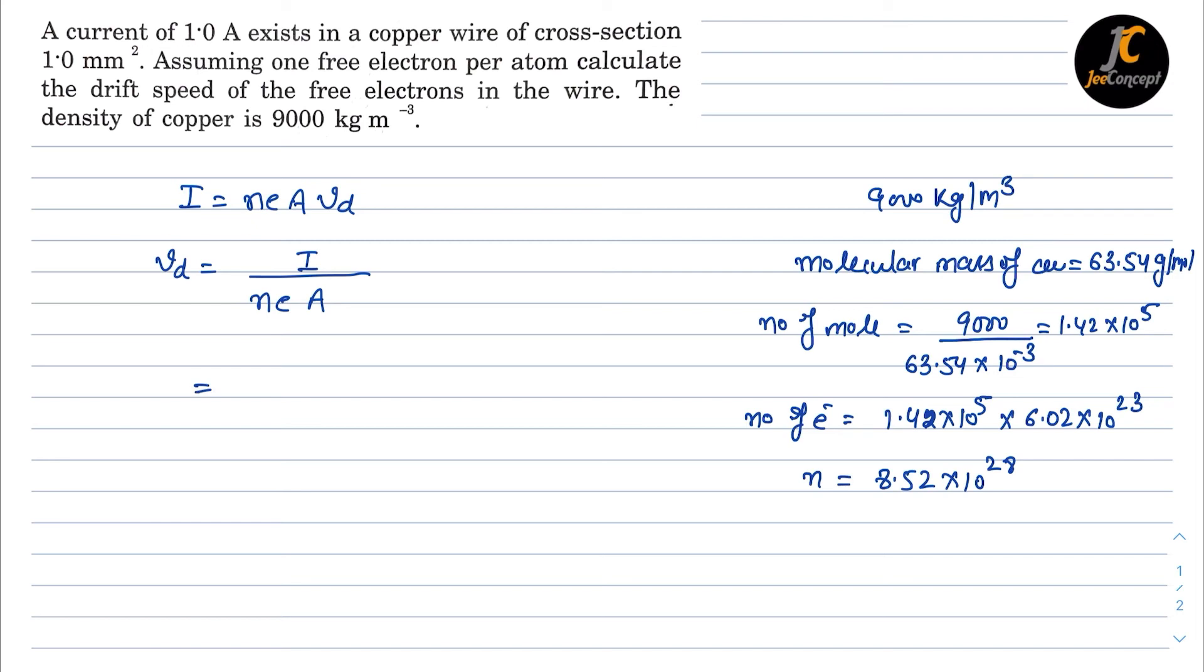Now we got all the values here. So I is 1 ampere upon N is 8.52 into 10 raised to power 28 into E is 1.6 into 10 raised to power minus 19, and area is 1 mm square so we will convert that into meter square, so 1 into 10 raised to power minus 3 whole square.